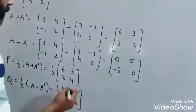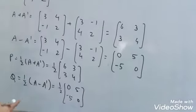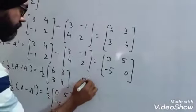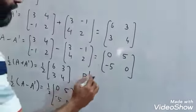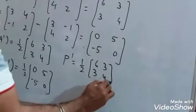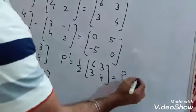To check whether P is symmetric, let's find P transpose. P transpose is again [6, 3; 3, 4], which equals P. So P is symmetric.